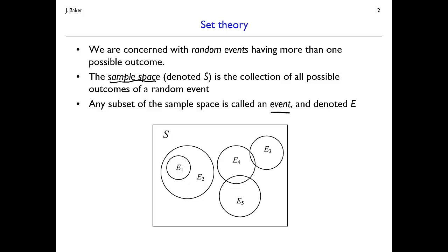An event may or may not happen depending on the outcome, and we'll denote it E. A common way we visually represent these situations is with Venn diagrams, as shown in the figure at the bottom. The large rectangle indicates the sample space, and all possible outcomes fall inside that rectangle. We can have multiple events inside the sample space, denoted E1, E2, et cetera.